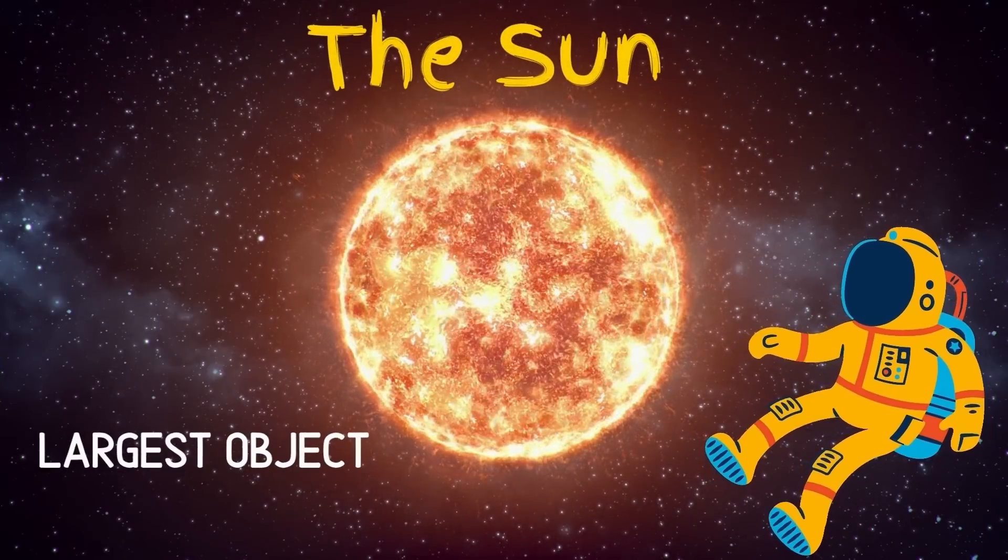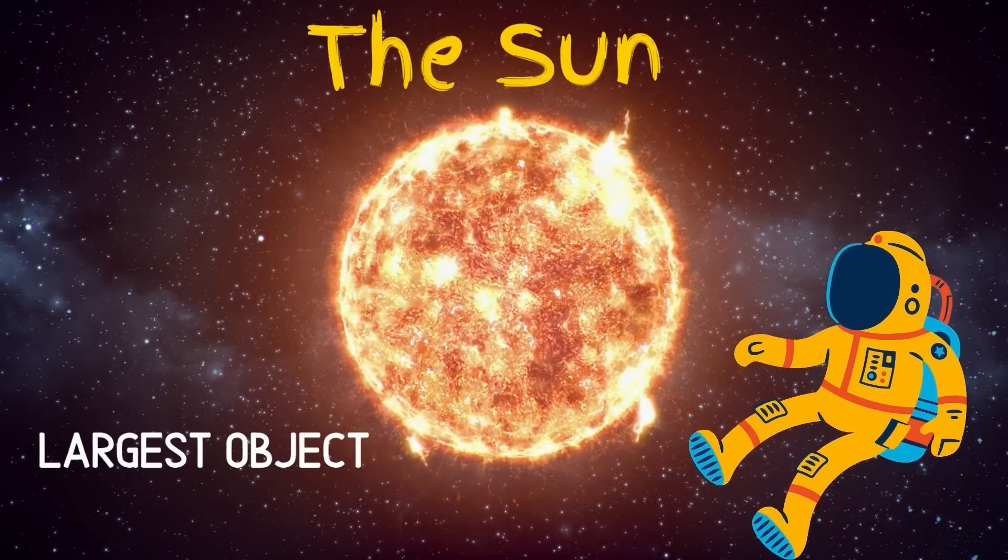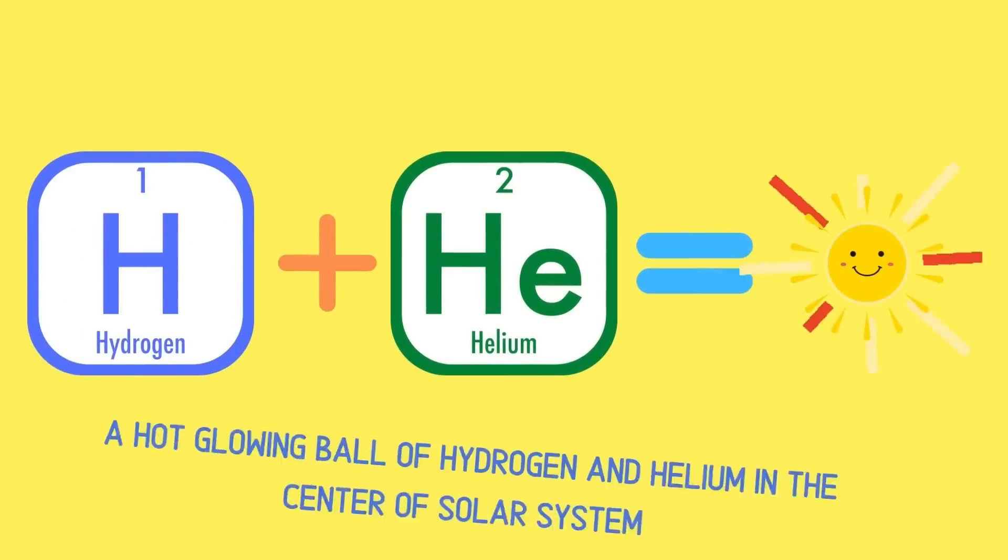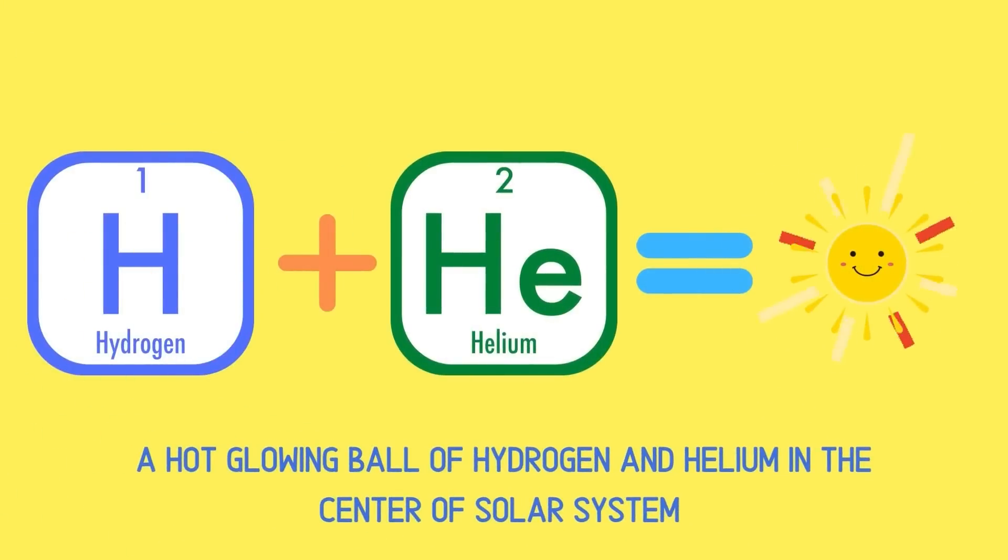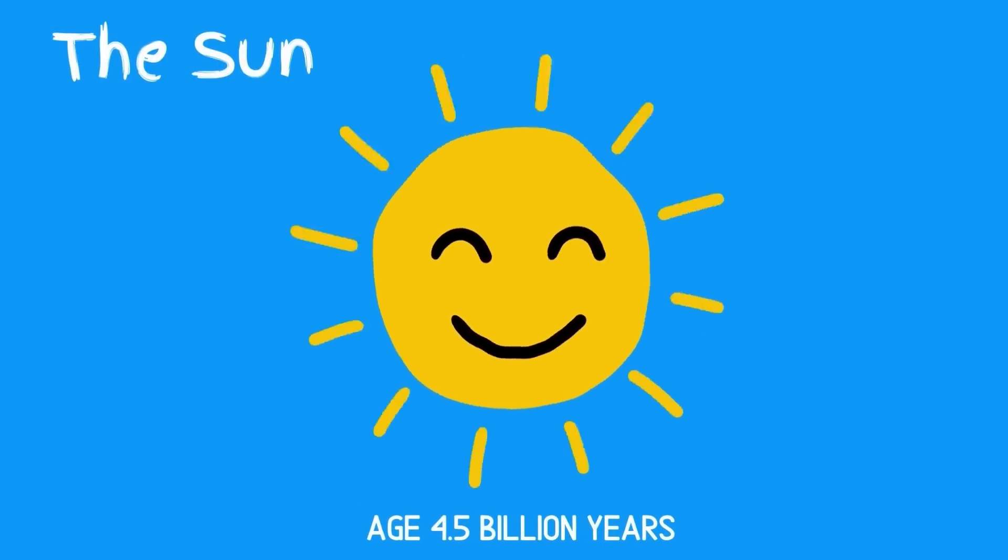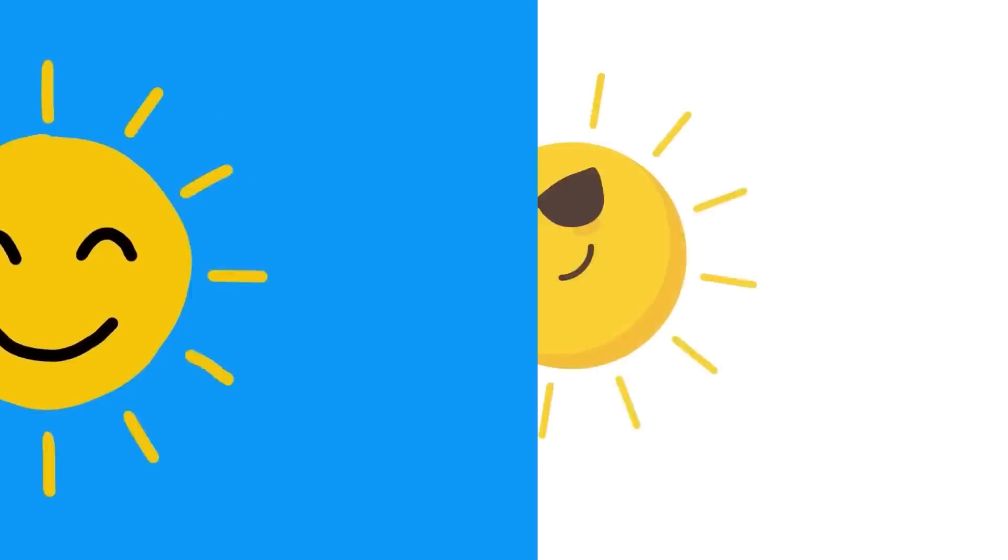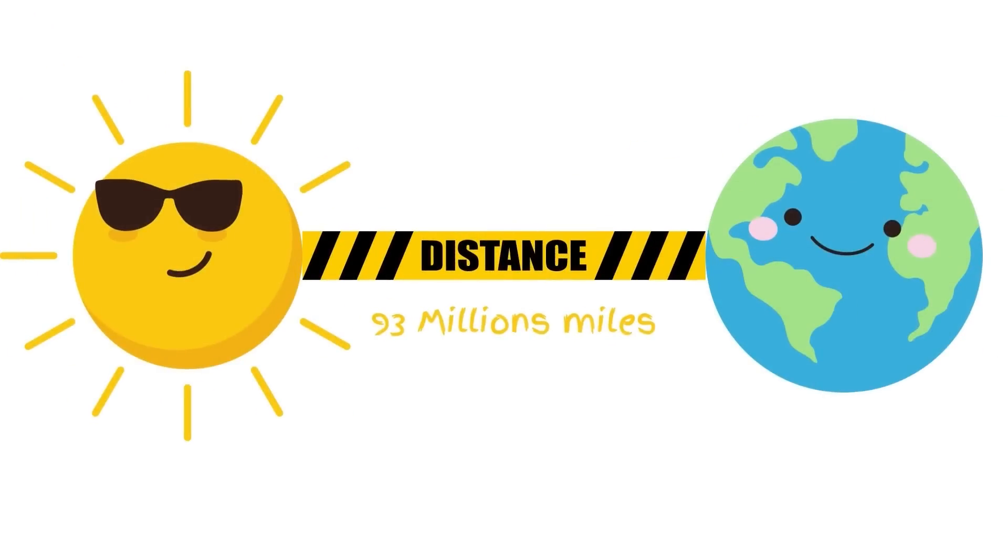Let's learn about the sun first. The sun is the main and the largest object of the solar system. The sun is a hot glowing ball of helium and hydrogen. The sun is 4.5 billion years old. The distance between Earth and the sun is 93 million miles.